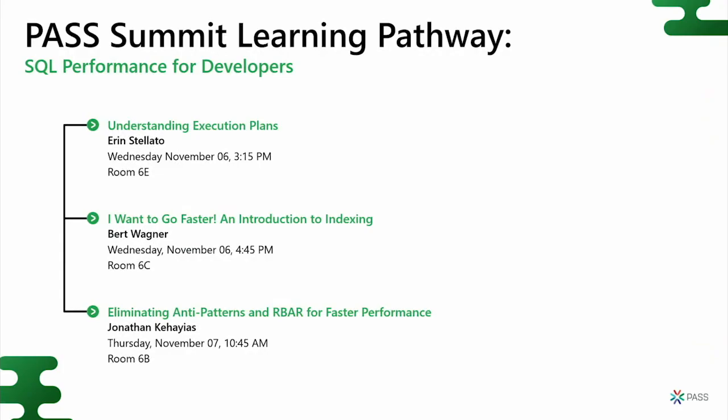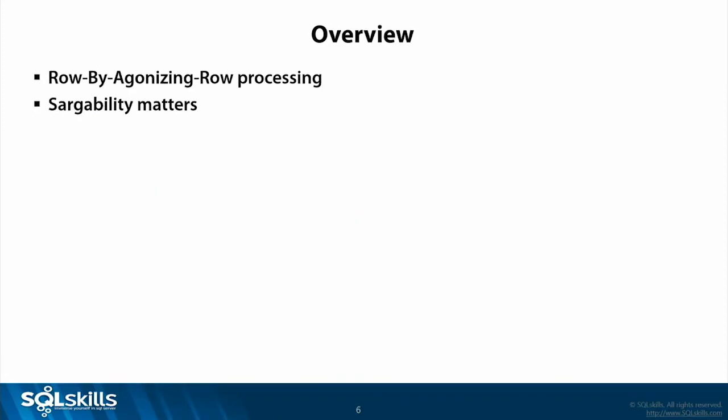This session is part of one of the PASS Summit learning pathways — the SQL Performance for Developer pathway — that started with my co-worker Aaron Stellato presenting on execution plans yesterday, and then Burt Wagner presented 'I Want to Go Faster: An Introduction to Indexing.' This session is more about coding patterns that don't go fast, or coding patterns that are going to result in slow execution times — what we consider REBAR: Row By Agonizing Row, loop-based processing in SQL Server. If we can keep our queries functioning against sets of data in autonomous operations, it'll be much faster.